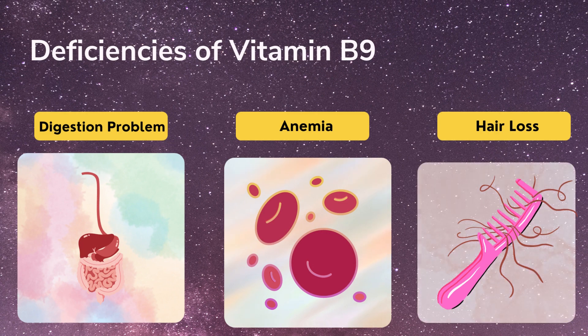Now let's look at the deficiencies of vitamin B9. It can lead to digestion problems if not taken in the proper amount. It can also lead to anemia — as mentioned, vitamin B9 improves hemoglobin levels, so a deficiency will cause hemoglobin levels to drop, resulting in anemia. This means there will be no proper storage of oxygen in the blood cells, which can cause a lot of weakness and tiredness. Hair loss can also occur because there's no proper synthesis of DNA — when there's proper vitamin B9 in the body, hair synthesis takes place normally.